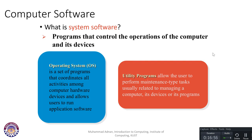System software consists of programs that control the operation of a computer and its devices — like Windows, macOS, Unix, and Linux. The operating system is a set of programs that coordinates all activity among computer hardware devices and allows users to run applications. It acts as a bridge between hardware and application software. Utility programs allow users to perform maintenance tasks related to managing a computer — such as calculators, drivers, snipping tools, and zoom utilities.